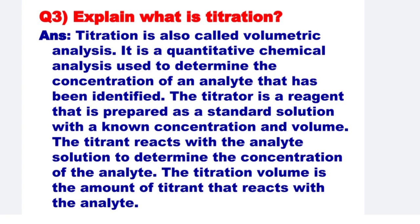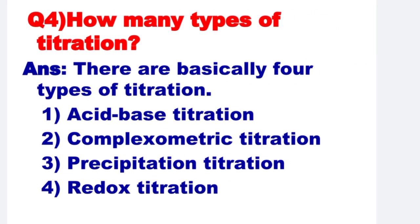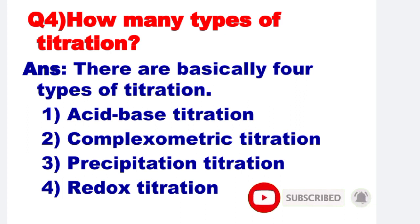The titration volume is the amount of titrant that reacts with the analyte. Next: How many types of titration are there? There are basically 4 types of titration: number 1 is acid-base titration, number 2 is complexometric titration, number 3 is precipitation titration, and number 4 is redox titration.